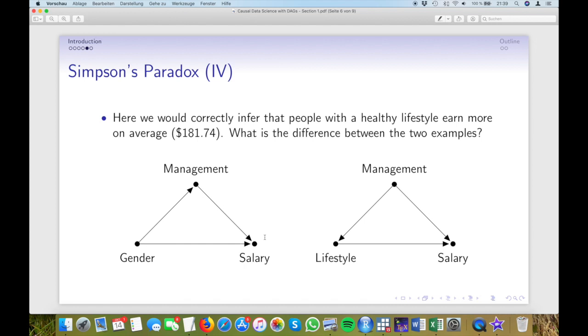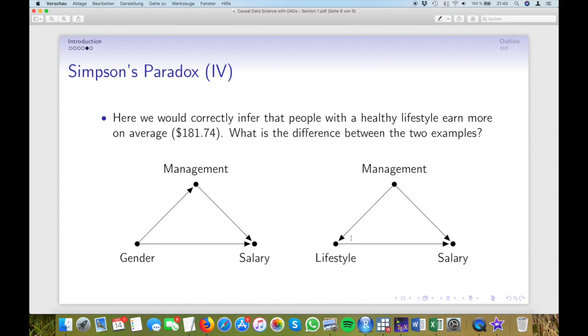That is different in the second example. Here it makes more sense to treat management as a variable that affects lifestyle and not the other way around. It is hard to get into a management position simply by living healthily. On the other hand, whether you work long stressful hours might very well have a detrimental effect on your health. In that case, to get at the pure effect of lifestyle on salary, we want to adjust for job position in the analysis. Otherwise, we would run into the risk that all the unhealthy managers with huge paychecks in our sample will bias the results.